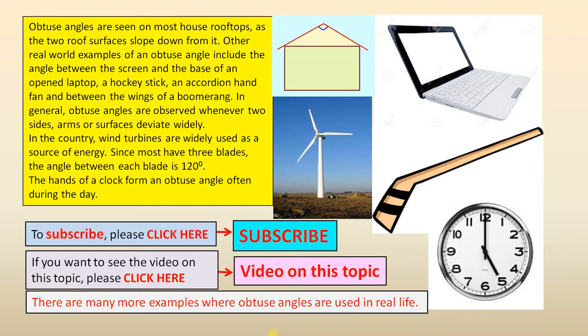Obtuse angles are seen on most house rooftops as the two roof surfaces slope down from it. Other real world examples of an obtuse angle include the angle between the screen and the base of an opened laptop, a hockey stick, an accordion hand fan, and between the wings of a boomerang.